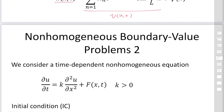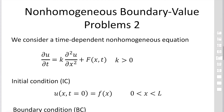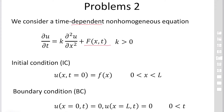In the second case, we consider time-dependent non-homogeneous equations where the capital F is a function of both x and t. When F is a function of x alone, we can apply the first method. But when F depends on both x and t, we cannot use that method and must use a different approach — the standard method for non-homogeneous boundary value problems.